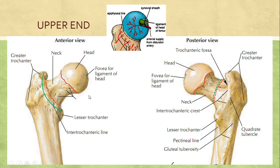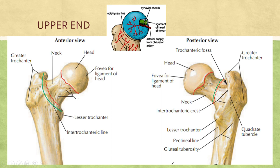The upper end of femur consists of the head, which is the rounded part, and then the constricted trapezoidal part is the neck of femur. Then we have two elevations: the larger lateral one is called the greater trochanter and the smaller posterior one is called the lesser trochanter. The junction of the upper end with the shaft is marked anteriorly by the intertrochanteric line and posteriorly by the intertrochanteric crest.